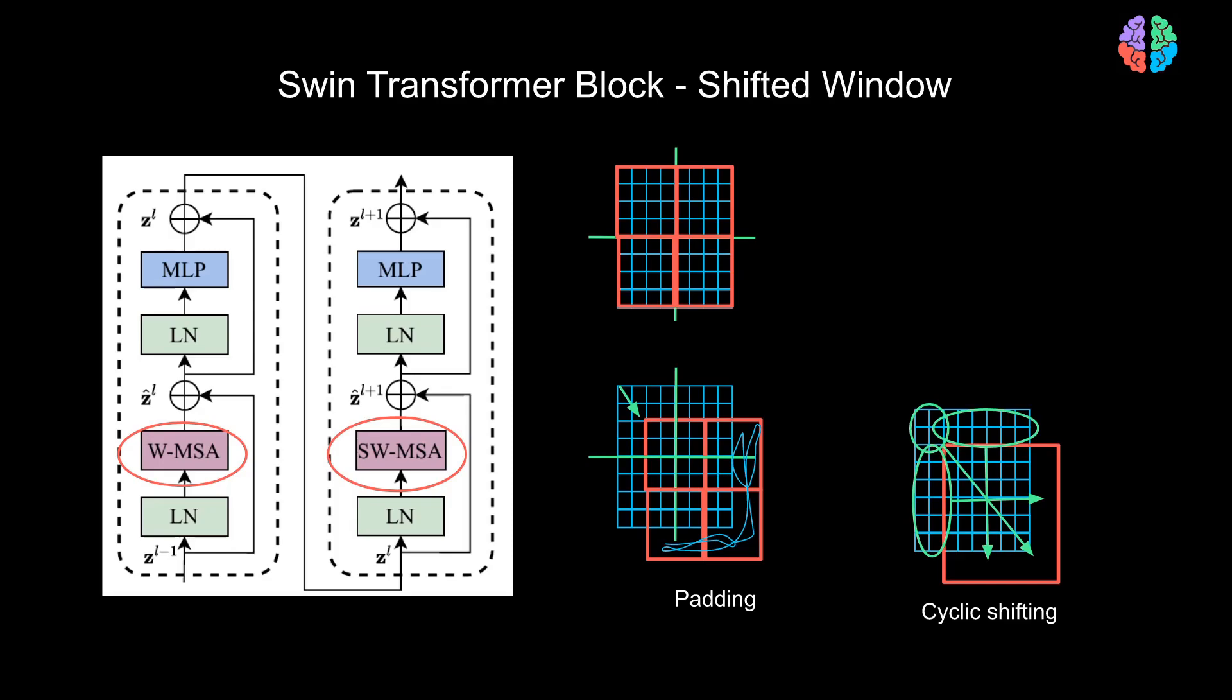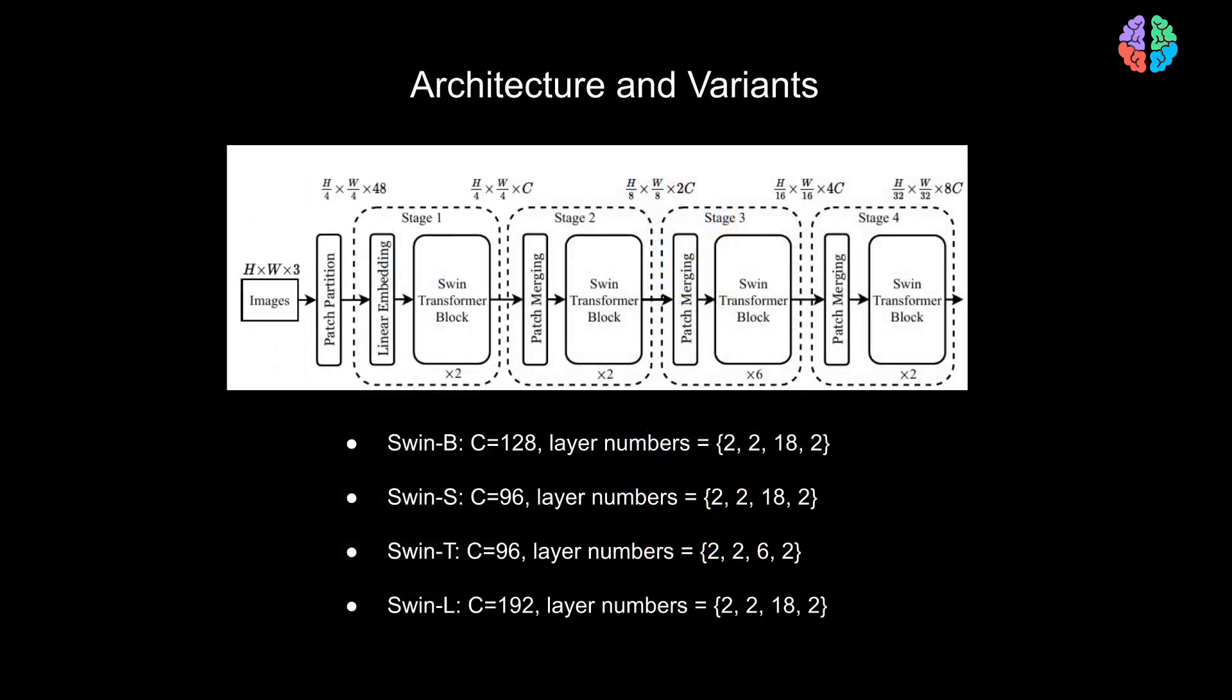With that, I think I have illustrated all of the ideas proposed in the paper. Let's now go back and have a look at the architecture once again. We have covered patch partition. We also saw how they use the linear embedding layer to go from 48 dimension to C dimensions. We also saw the patch merging, where we convert a 4x4 patch to an 8x8 patch.